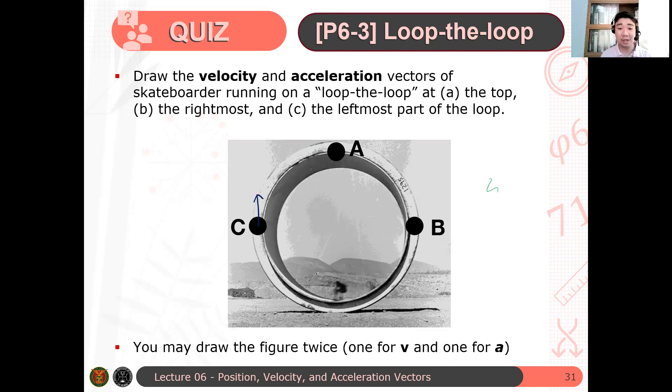At point A, saan dapat yung direction ng velocity vector? Right. At the right, kasi it points towards right. Kasi the particle moves towards right. So dito siya. So this is Vc. This is Va.